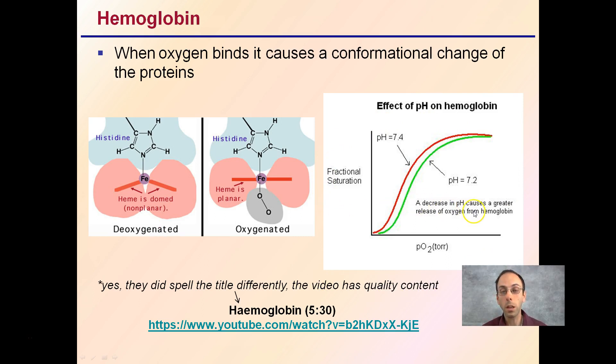Also pH is another factor that can affect that. We see here a decrease in pH causes greater release of oxygen from hemoglobin. So pH of 7.4 to 7.2, you can see that shift, that noticeable shift in the effect of the saturation of the oxygen. This is why our blood is kept in a very tight pH range, because you want the protein hemoglobin to be able to function properly.